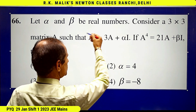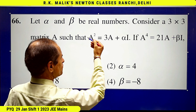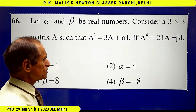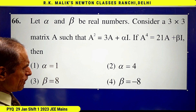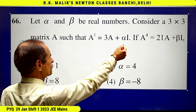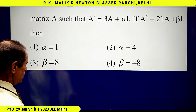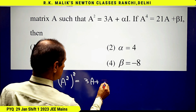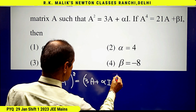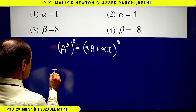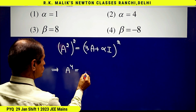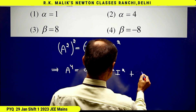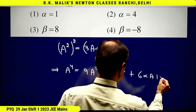Just square both sides of the first equation, bring it into the required form, and then compare coefficients to get the values of alpha and beta. Starting with the first equation and squaring both sides, I get A squared whole square equal to 3A plus alpha I whole square, which gives A to the power 4 equal to 9A squared plus alpha squared I squared plus 6 alpha AI.